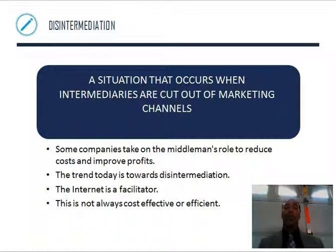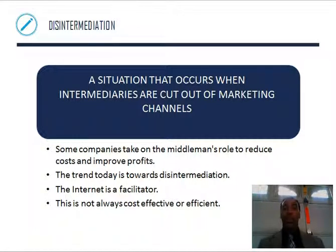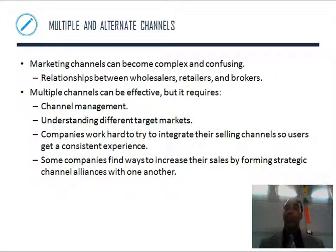Disintermediation is a situation that occurs when intermediaries are cut out of the marketing channel. For example: we used to have Amazon ship wood from a supplier to us, but now we moved our company next door to the wood supplier — they just bring it next door, and we cut Amazon out of the channel. Some companies take on middleman roles to reduce costs and improve profits, though some try and don't do it successfully. The trend today is towards disintermediation — the internet is a facilitator. But this is not always cost-effective or efficient because sometimes people don't know what they're doing.